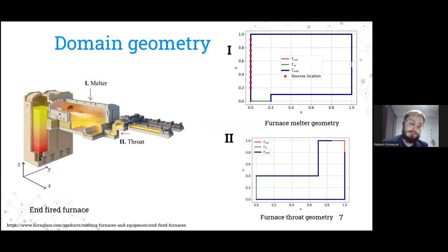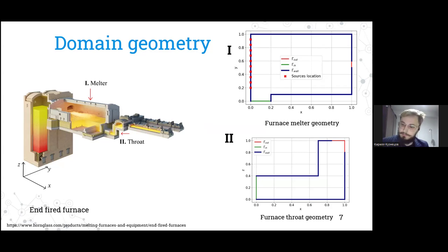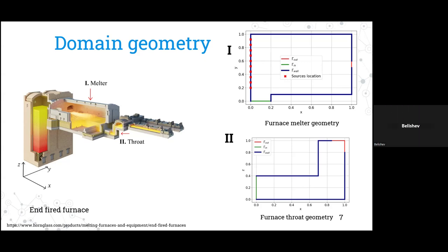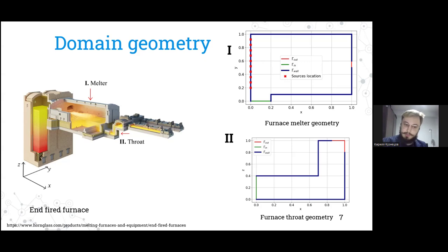We also try to solve another problem in a subdomain called the throat — in Russian, approximately 'перешеек' (isthmus), as I would call it, since I could not find an exact translation. In the throat, we have no sources, and heated liquid melted glass flows through the green boundary and outflows toward the red boundary.